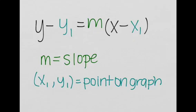It basically states y minus y1 is equal to m times the quantity x minus x1. m is the slope, and x1, y1 is the point on the graph. So y1 and x1 are actual numbers.